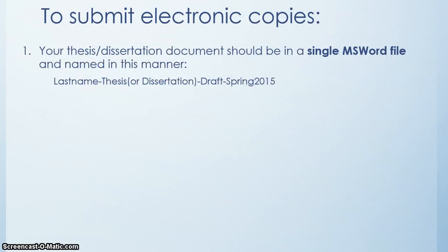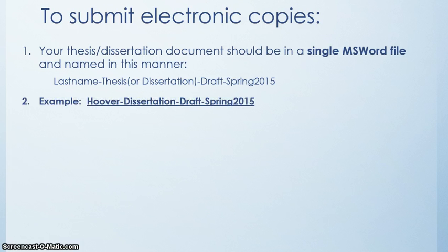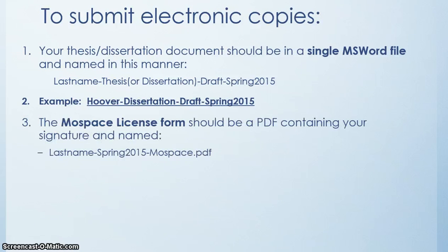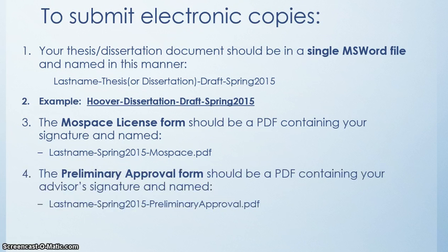If you are going to submit an electronic copy, it needs to be in a single MS Word file and named with our convention of last name-thesis-draft-spring-2015. There is an example for you. The MoSpace license form should be a PDF containing your signature and be named last name-spring-2015-mospace. The preliminary approval form should be a PDF containing your advisor's signature and named in the same method.